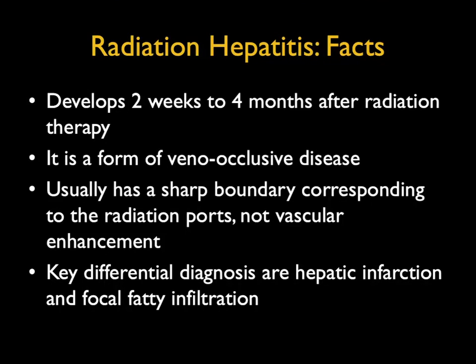Just some facts: radiation hepatitis develops two weeks to four months after radiation therapy. It's a form of veno-occlusive disease, and usually has a sharp boundary corresponding to the therapy ports. The key differential diagnosis is infarction and fatty infiltration of the liver, but the unique port pattern and clinical history make the diagnosis fairly simple.